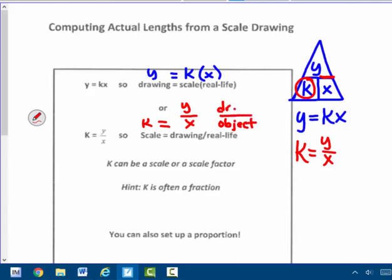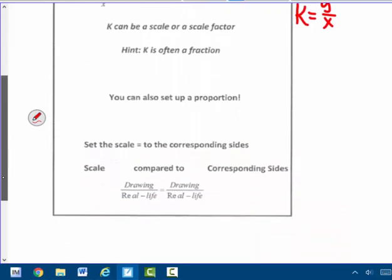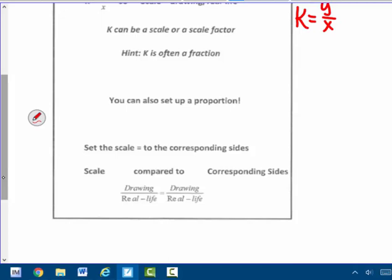Or the drawing, or the model for instance. It could be the model, it could be a drawing, so on and so forth. k can be a scale or a scale factor. Hint, k is often a fraction. We've seen that. Sometimes it's not, though. The scale factor could be three times bigger.